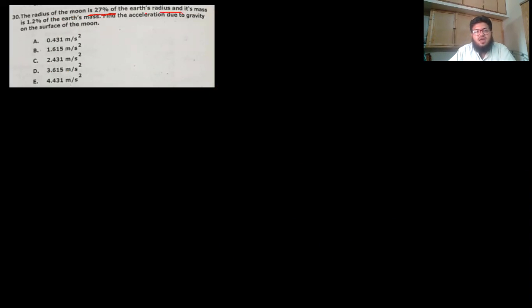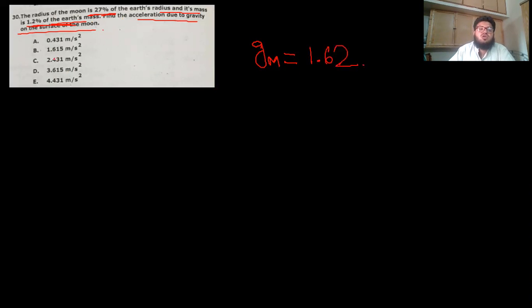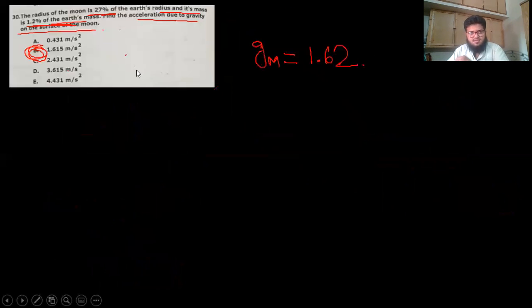For the question about the moon's acceleration due to gravity: the radius and mass of the moon are given, and the acceleration due to gravity on the moon is asked. We know g on the moon is approximately 1.62 m/s², so you can mark that directly.